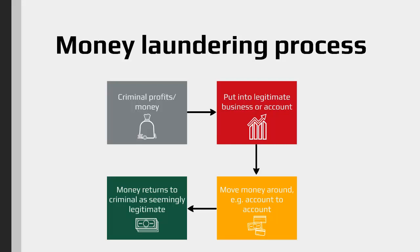Then we follow the arrows down to the yellow box, which is called layering. This is when the money is transferred from place to place to conceal its criminal origins — moving from shop to business to business, or from bank account to bank account, getting further away from the criminal activity.